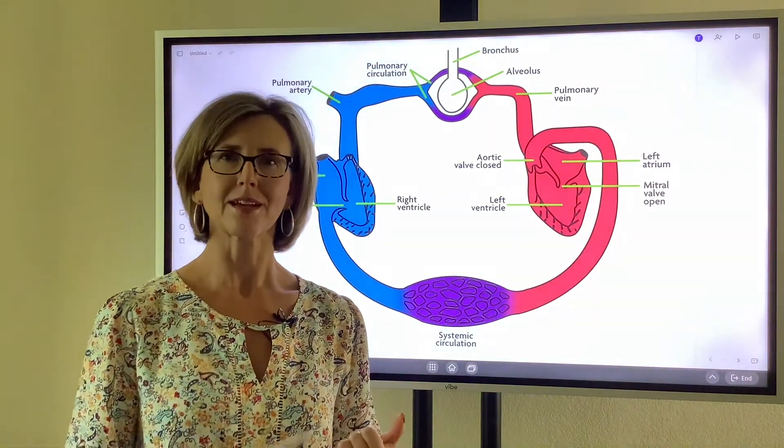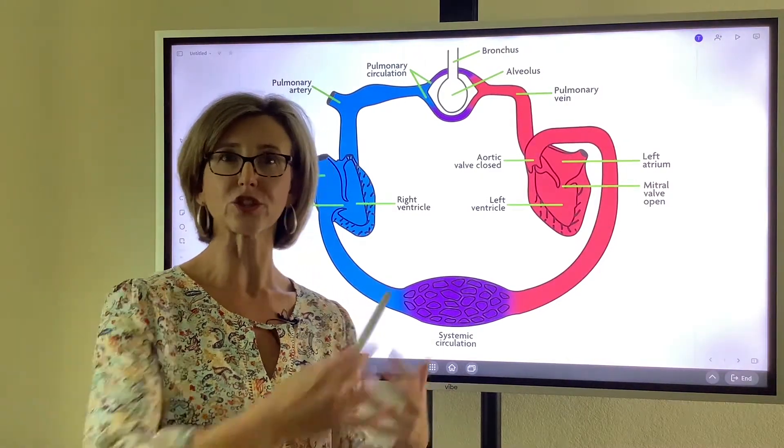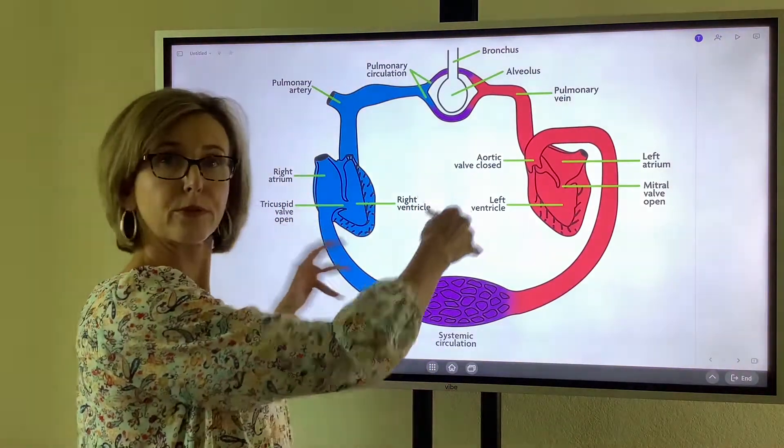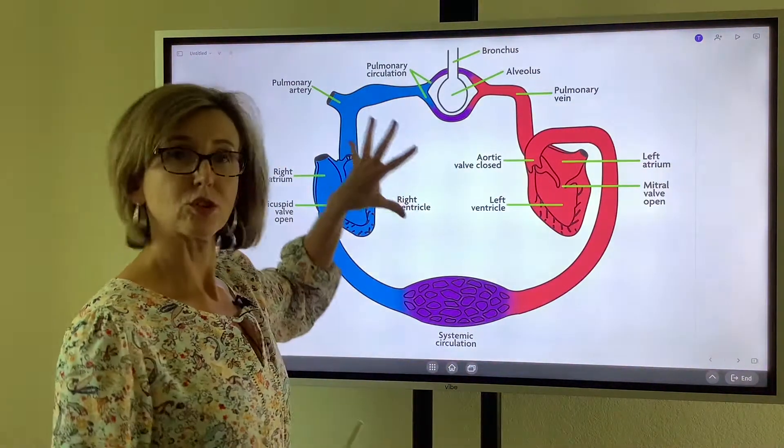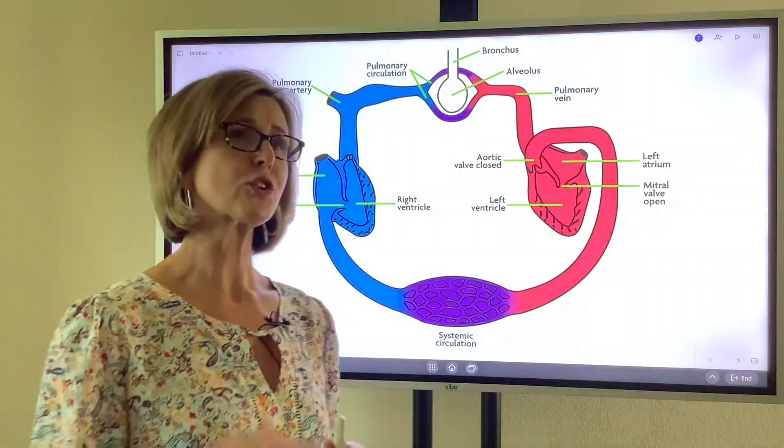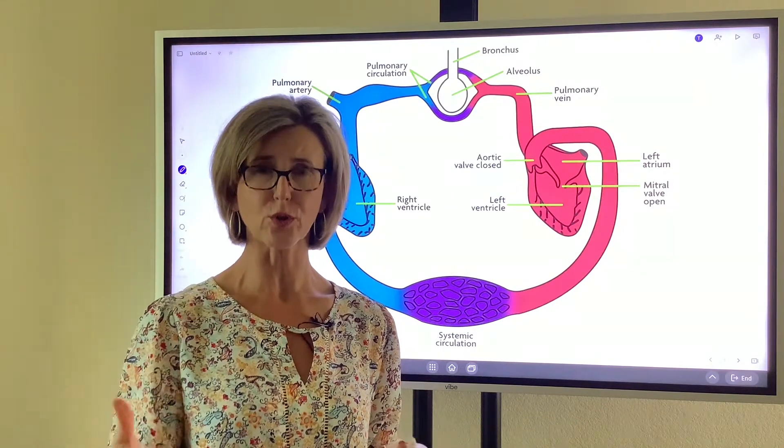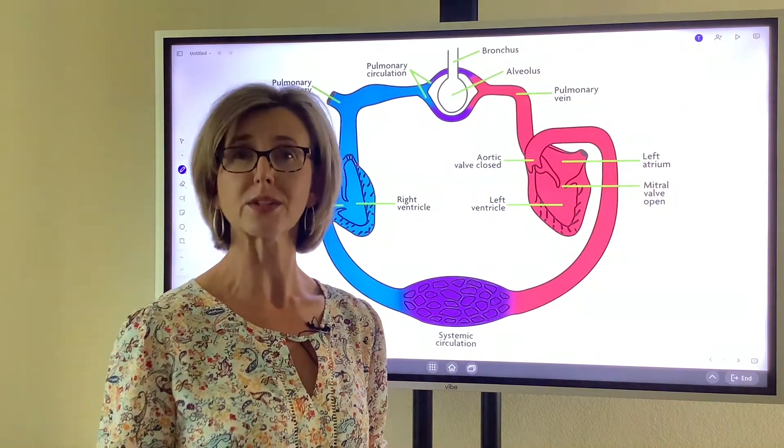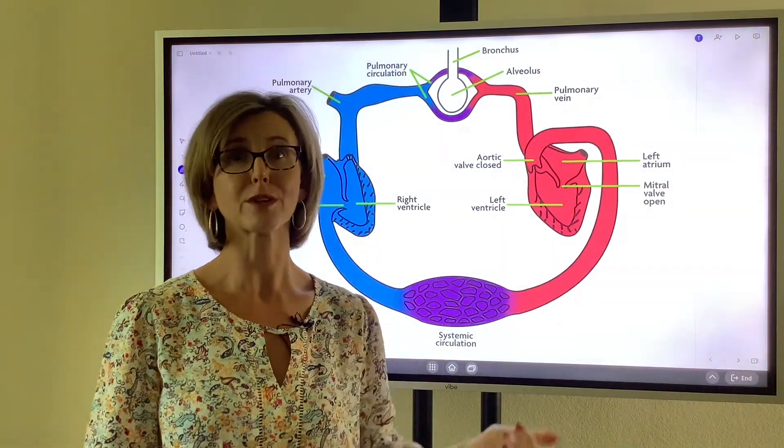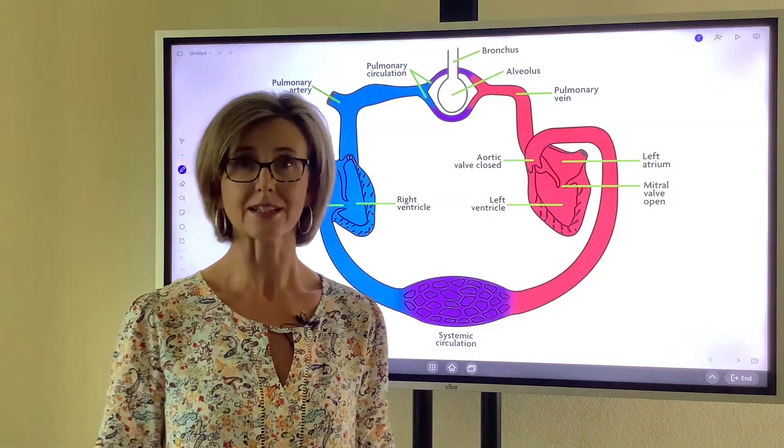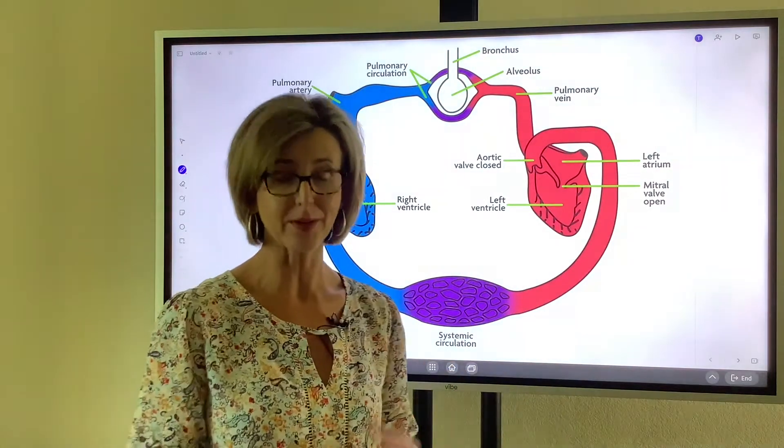There are certain aspects of patient assessment where you really have to look for changes in blood through the system. For example, you've heard of jugular venous distension. That is a direct result of what's going on here. You're going to get to a specific course in your curriculum that deals with hemodynamics. You have to understand blood flow through the heart forwards and backwards to understand hemodynamics. If you can get this taken care of at the onset, it'll help.